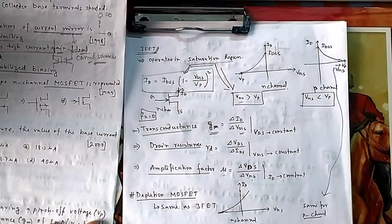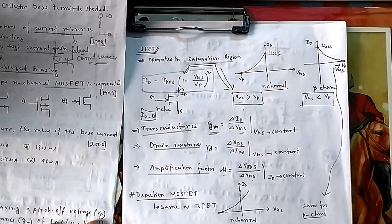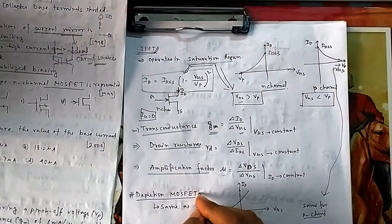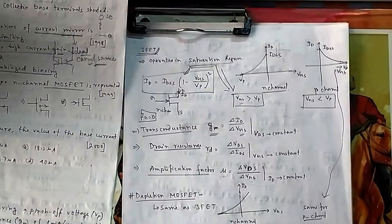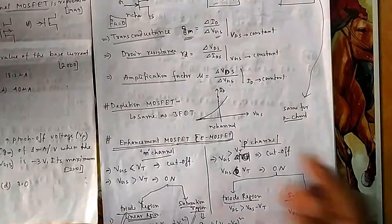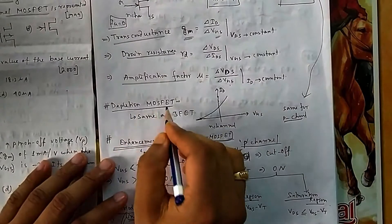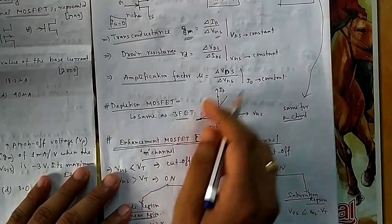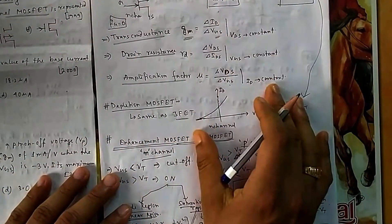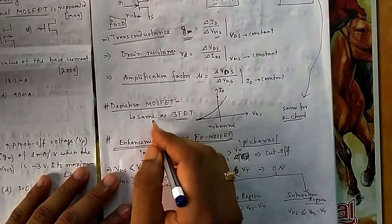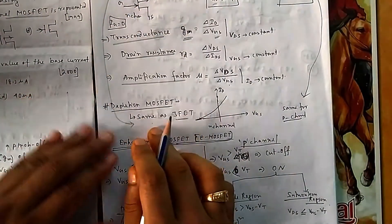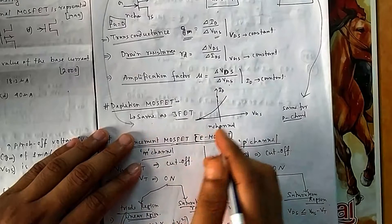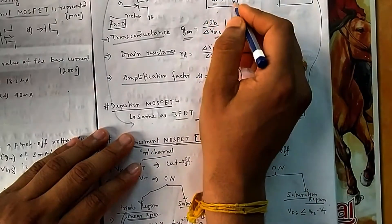For MOSFETs, there are two types: depletion type and enhancement type. The depletion-type MOSFET uses the same formula as JFET — the I_D formula applies here too. It operates in saturation when V_GS is greater than V_P, and the curve is the same as JFET.